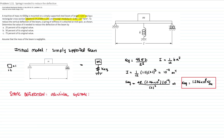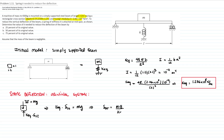The next step is to calculate the static deflection of the original system. We have our model: the mass has a weight and is supported by the spring constant, deflected by a static deflection. If we are in equilibrium, the spring constant times the static deflection equals the weight, and the weight is mass times gravity. Therefore, the static deflection equals mass times gravity divided by the spring constant. Using the given mass and g equals 9.81, divided by the number just calculated, that gives a static deflection of 3.9 times 10 to the negative 5 meters.